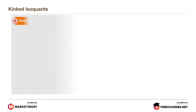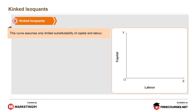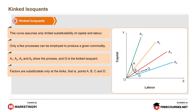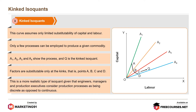Moving on to kinked isoquant. This curve assumes only limited substitutability of capital and labor. Only few processes can be employed to produce a given commodity. A1, A2, A3 and A4 show the processes and Q is a kinked isoquant. Factors are substitutable only at the kinks — that is, points A, B, C and D. This is a more realistic type of isoquant given that engineers, managers and production executives consider production processes as being discrete as opposed to continuous.